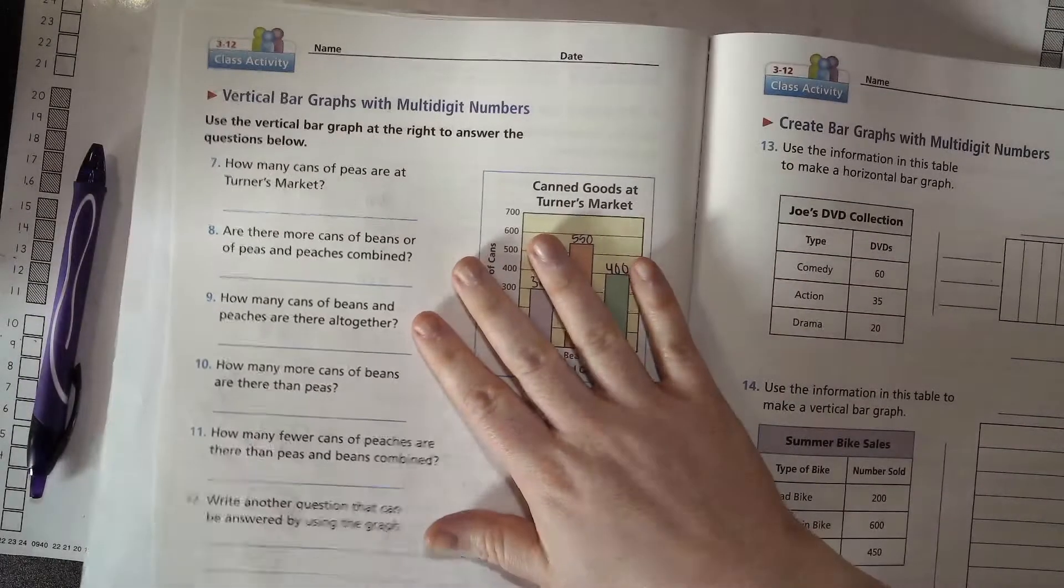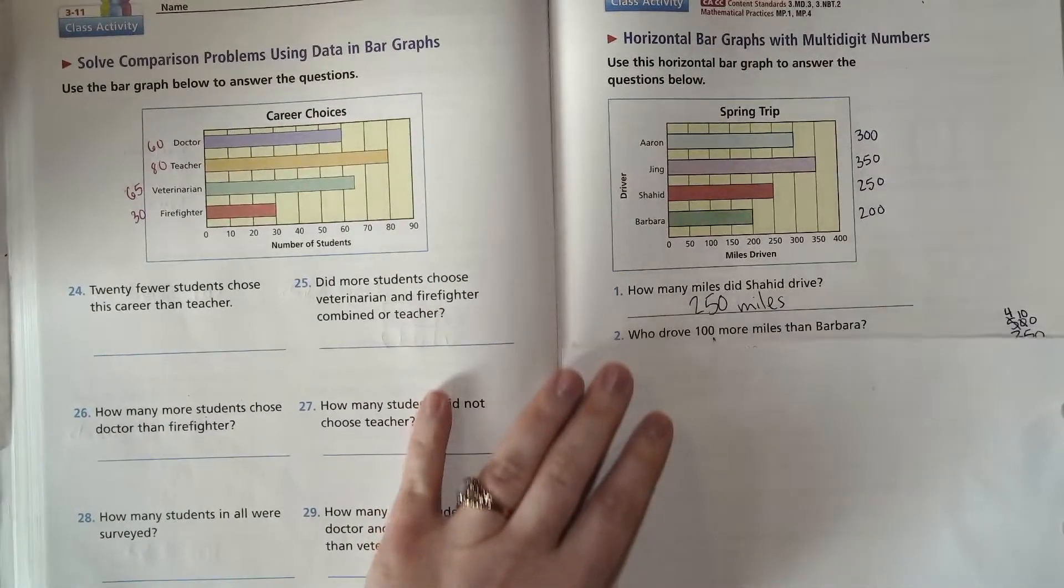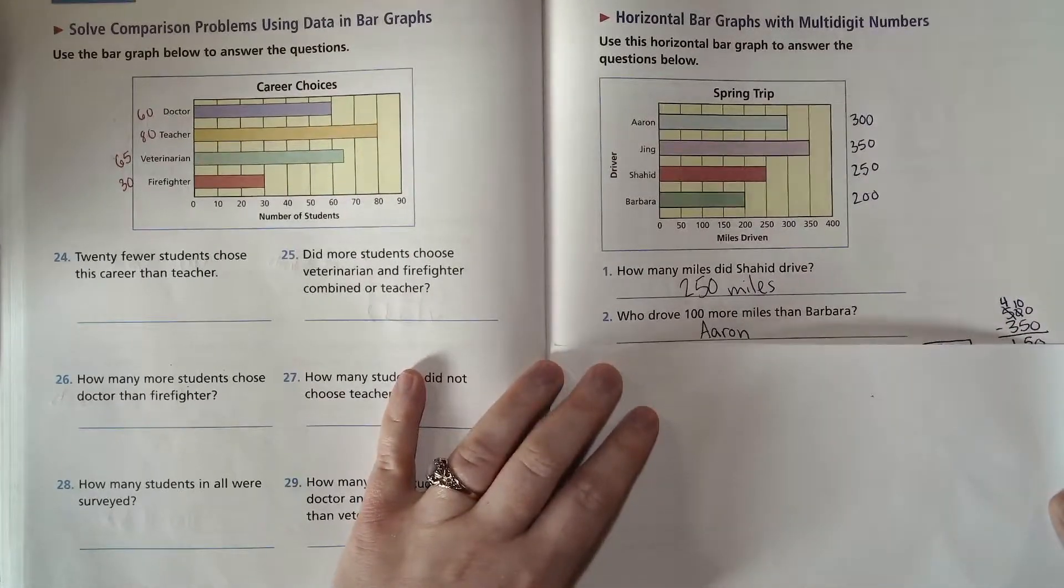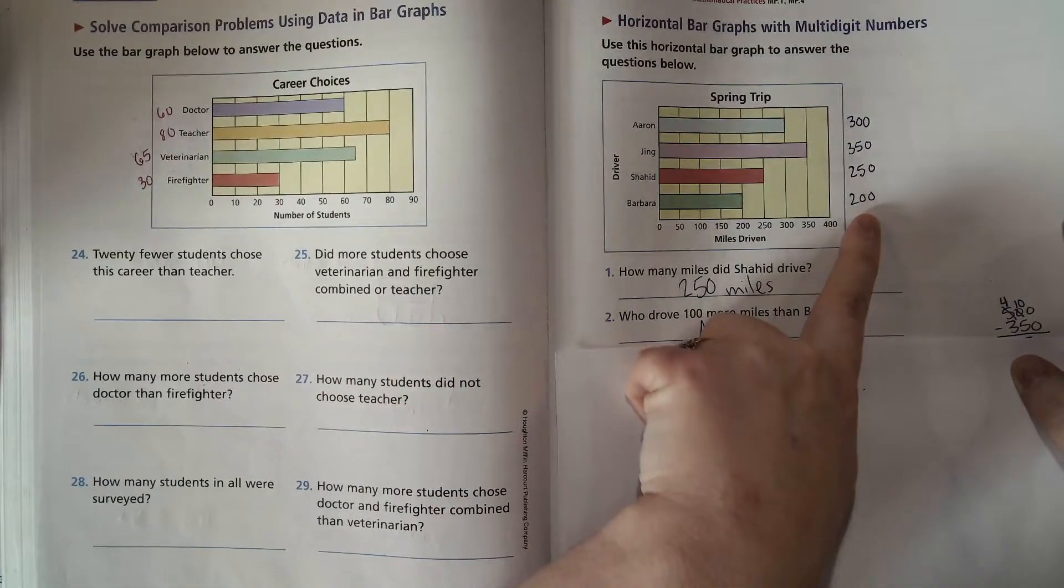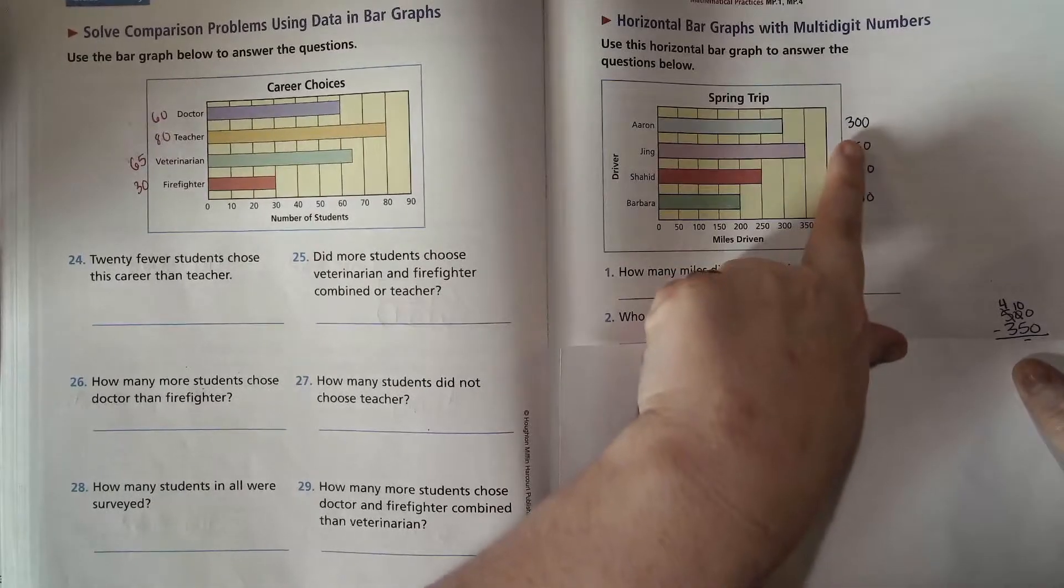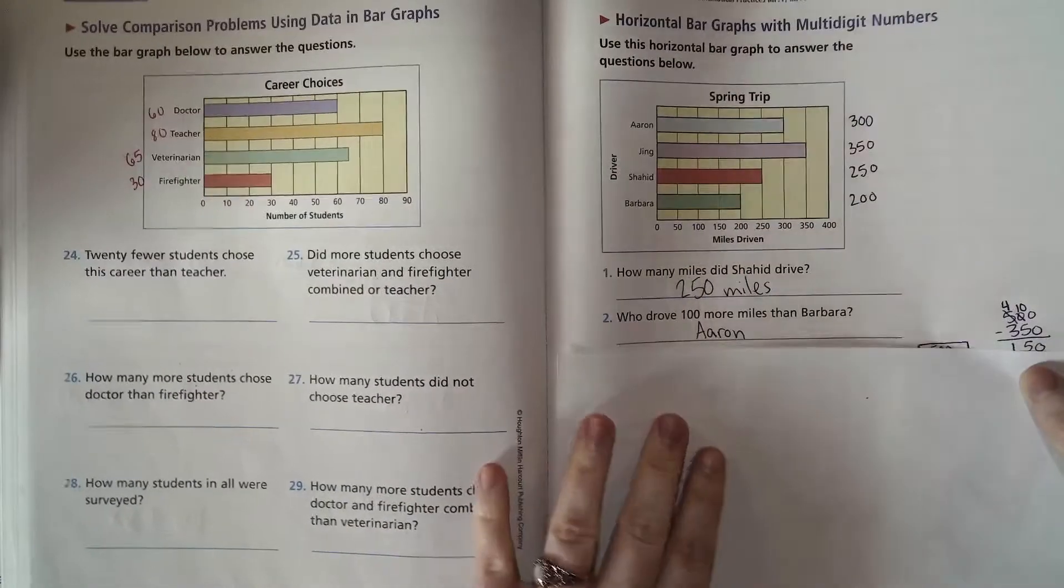So who drove 100 more miles than Barbara? So we look at Barbara's amount, which is 200, and we add 100 to it, and we see that Aaron did 300, and 200 plus 100 is 300, so that's perfect. So we write Aaron.